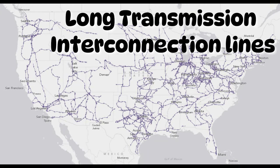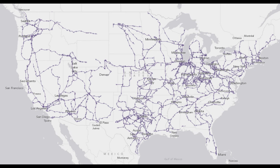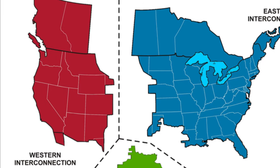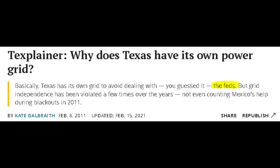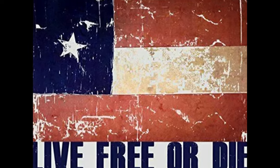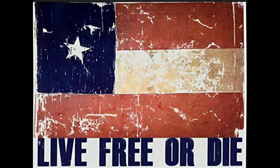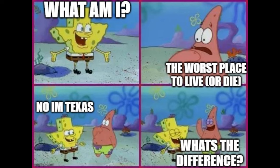Long transmission interconnection lines in America connect various smaller systems in the USA and Canada — the east, the west, and Texas. Why its own interconnection? Texas takes the meaning of 'live free or die' to a whole new level.